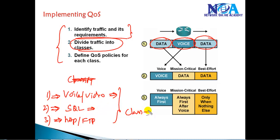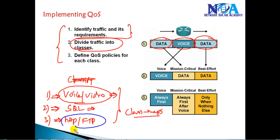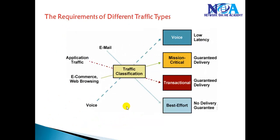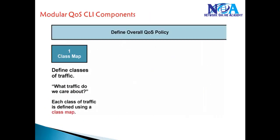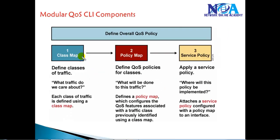We create something called class maps to differentiate and group traffic. Inside the Modular QoS CLI there are three different steps: first, we define a class map; then we apply a policy map; and finally we apply that policy on a particular interface. The class map is going to classify the traffic into different classes.